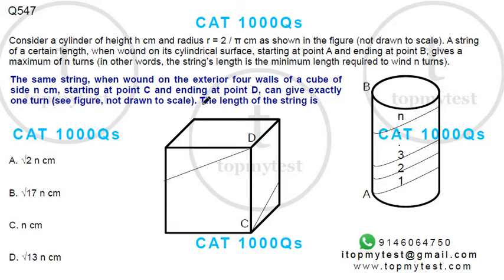The same string when wound on the exterior four walls of a cube of side n, starting from point C and ending at point D, gives exactly one turn, not drawn to scale. The length of the string is how much? Okay, so let's draw this. You have something like this - if I take out the cube you have the four surfaces wound around it. So one, two, three. The side of the cube is n, so this is n.